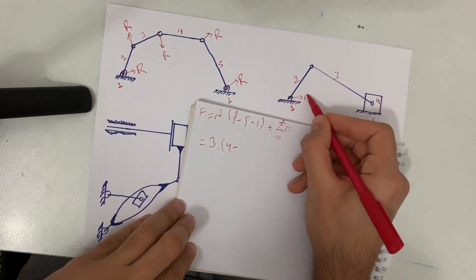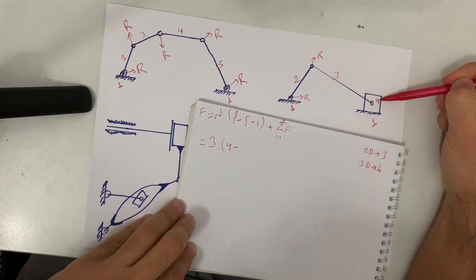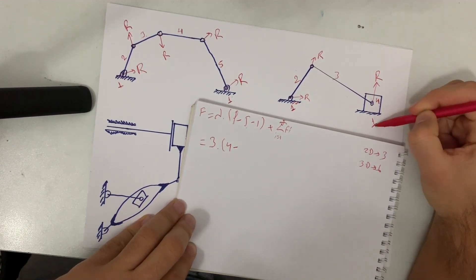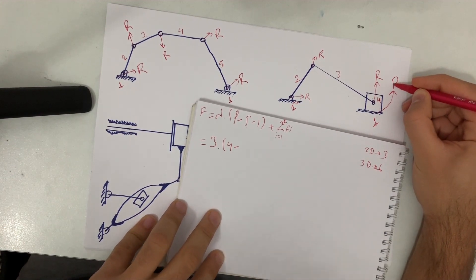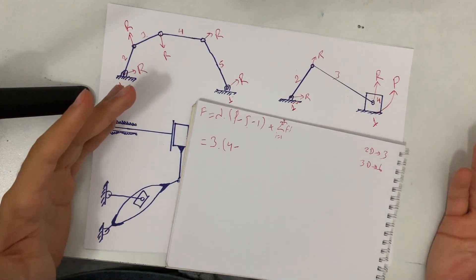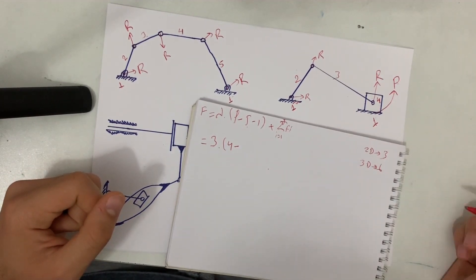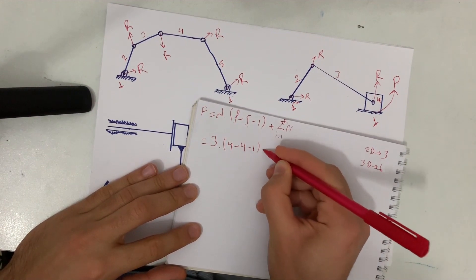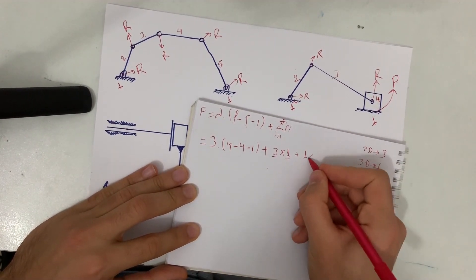Now let's find the joints. Between links 1 and 2: R joint. Between links 2 and 3: R joint. Between links 3 and 4: R joint. Between link 4 and the ground (link 1): a P (prismatic) joint, because there is sliding motion. Sliding motion always means a prismatic joint. So we have 3 R joints and 1 P joint, giving J = 4.